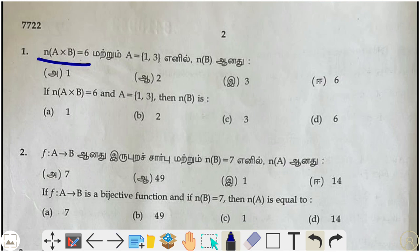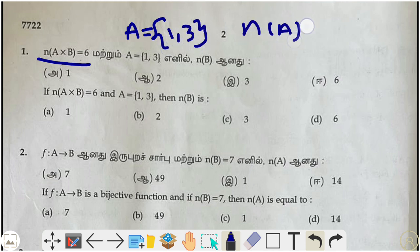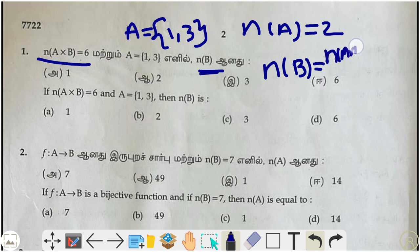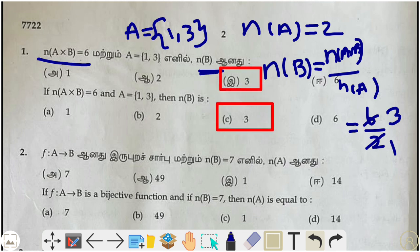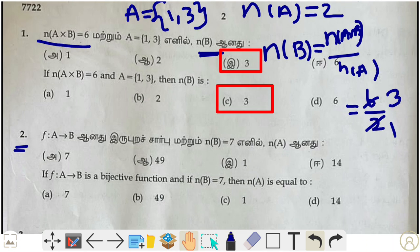First question: n(A×B) = 6, and set A consists of elements {1, 3}, which means n(A) = 2. We need to find n(B). We know that n(B) = n(A×B) ÷ n(A), so n(B) = 6 ÷ 2 = 3. So option C, that is 3, is the correct answer.